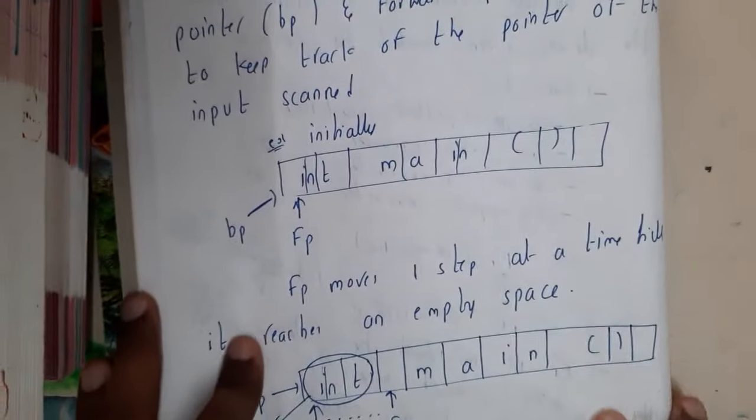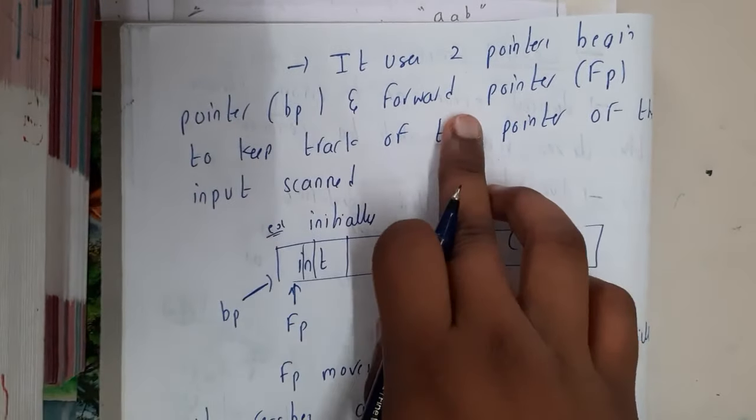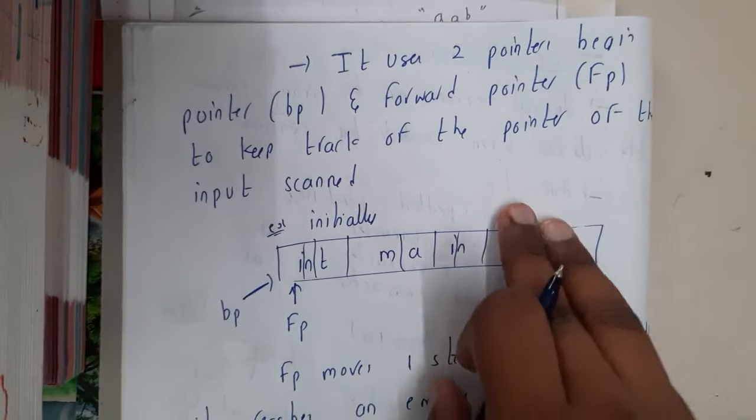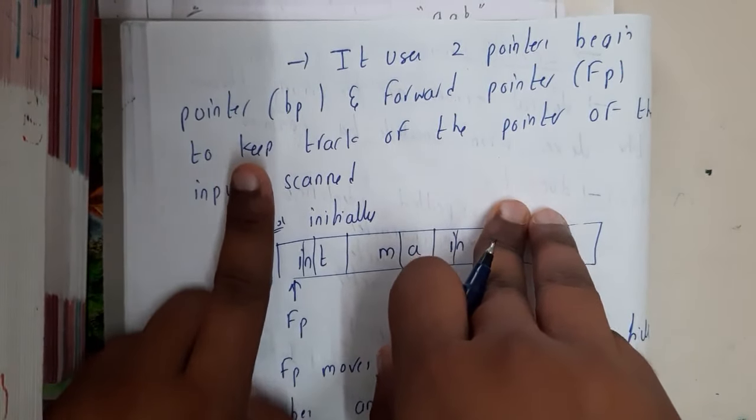Here we will be using two different pointers. The first pointer is the begin pointer and the second pointer is the forward pointer. The begin pointer will always point to the start of that particular lexeme.